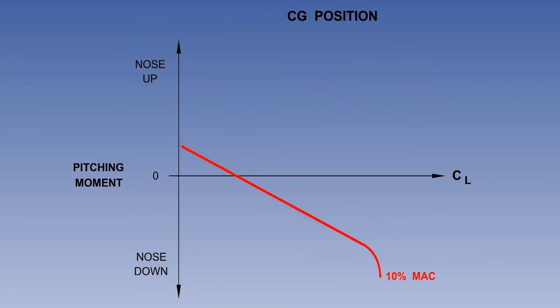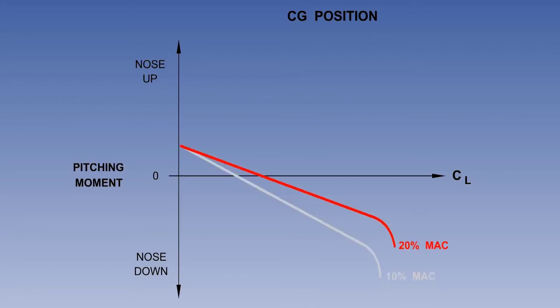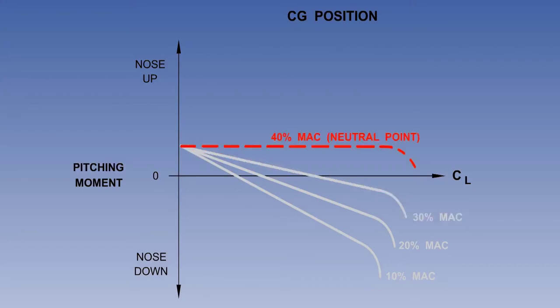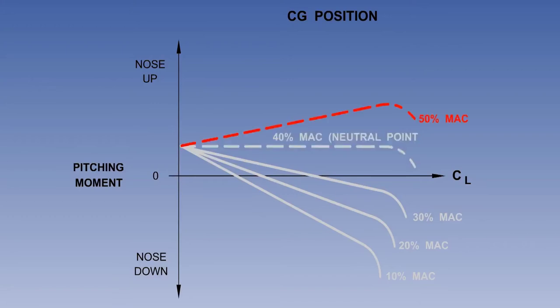We can use the graph to show the effect of CG position on longitudinal static stability. With the CG at 10% MAC, the aircraft is stable. The aircraft is less stable with the CG at 20%, and even less stable with the CG at 30%. 40% MAC is the neutral point, and with the CG at 50% MAC, the aircraft will be unstable. The neutral point and 50% MAC are shown with a dashed line because operationally, the CG must never be positioned outside the aft CG limit.